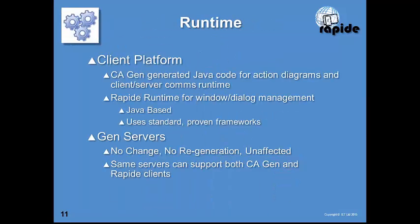For the runtime, on the client side you design action diagrams and procedure steps using Gen, then generate the action diagram code targeting Java, using the RAPID runtime which completely replaces the functions of the Gen GUI runtime. It is developed in Java as a cross-platform runtime using standard proven frameworks. On the server side, there is no change — your Gen servers are completely unaffected. The same servers that support a Gen GUI client today would also support a RAPID client, with no change at all on the server side.